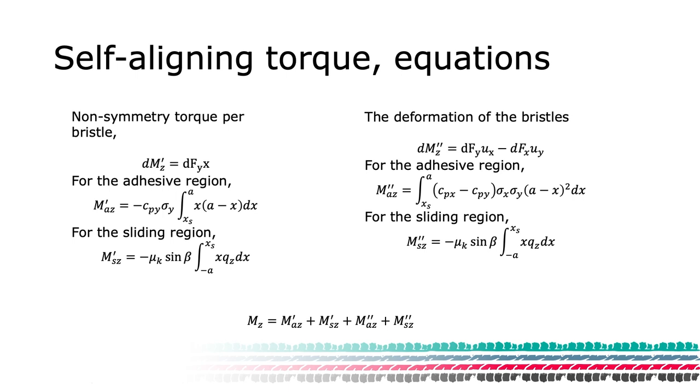We start with a non-symmetric case to the left and denote this MZ prime. We can formulate the contribution of each bristle to the torque as dMZ prime equal to the bristle's lateral force times its lever. Observe that we don't have a corresponding contribution from the longitudinal force as we have assumed that the tire is uniform in the lateral direction. Summing the contribution from the sliding and the adhesive part using expressions derived previously gives us the lumped contribution from the contact patch.